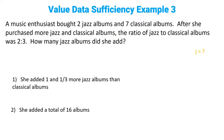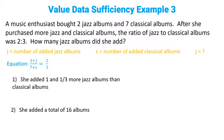We go back to the question, figure out what variables we've been given, and write down any equations. J is the number of added jazz albums — that's what we've been asked to find. C is the number of added classical albums. The equation we've been given is (2 + J) over (7 + C) equals two over three, because she started with two jazz albums and added J more, and started with seven classical albums and added C more. We cross-multiply and do a little algebra, and we find that the equation is 3J = 2C + 8.